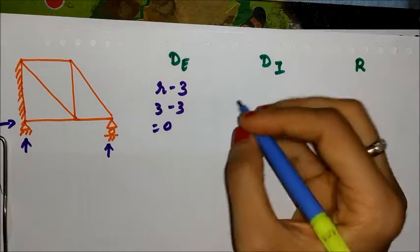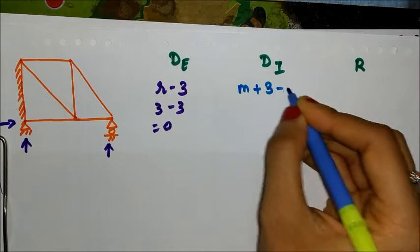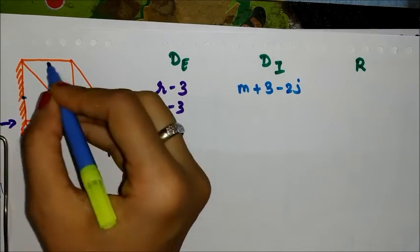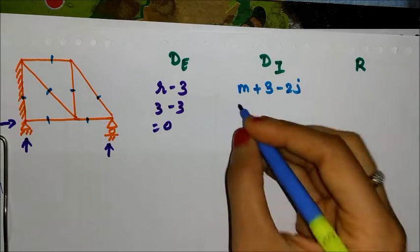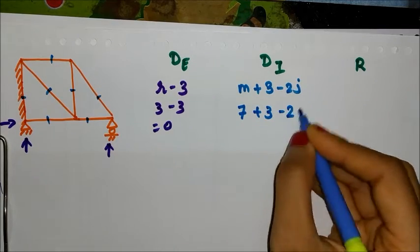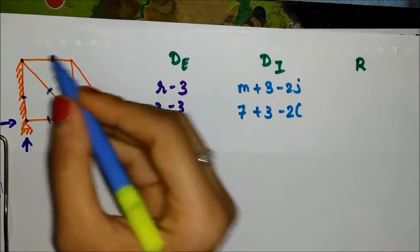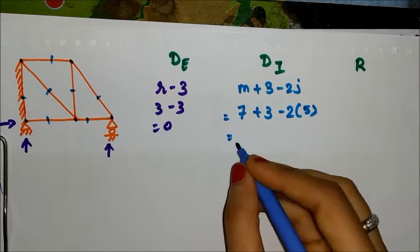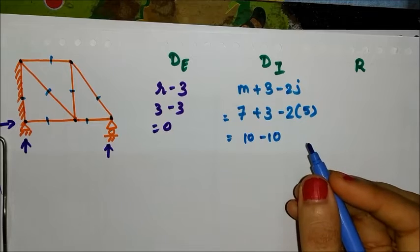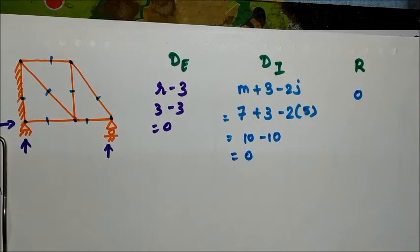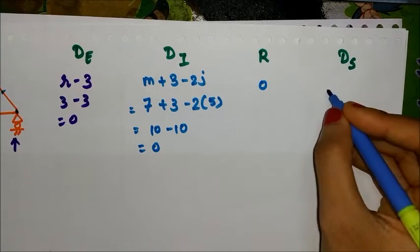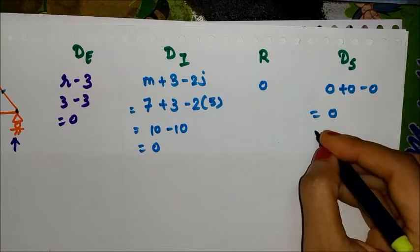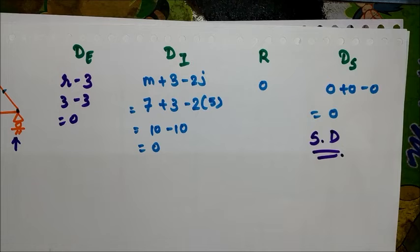Now for DI: m plus 3 minus 2j. How many members do we have? One, two, three, four, five, six, seven — so seven members. Seven plus 3 minus 2 times the number of joints. Joints: one, two, three, four, five — so five joints. The final answer is 10 minus 10, equal to zero. We don't have any releases, so DS equals zero plus zero minus zero. My structure is statically determinate.